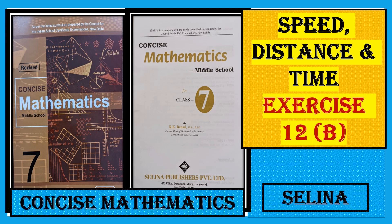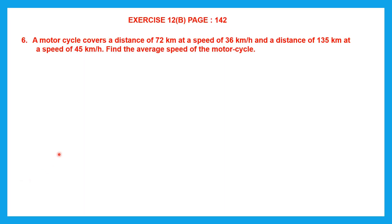Hello students, let's do speed distance and time exercise 12b, page number 142, question 6. A motorcycle covers a distance of 72 kilometers at a speed of 36 kilometers per hour and a distance of 135 kilometers at a speed of 45 kilometers per hour. Find the average speed of the motorcycle.